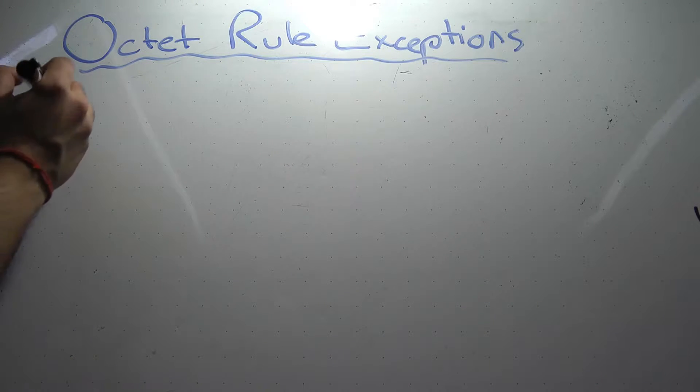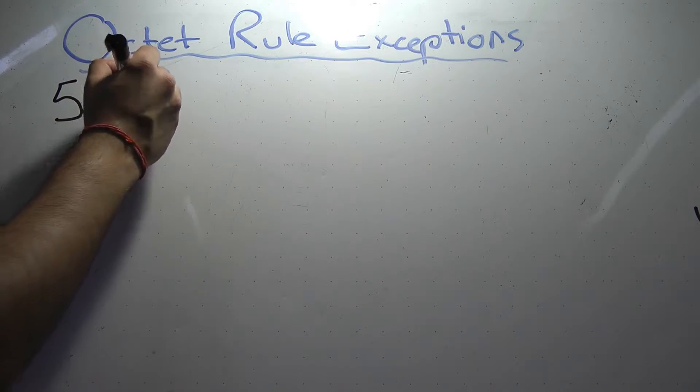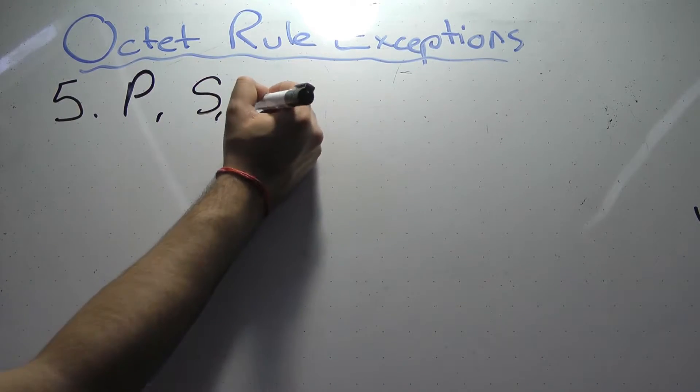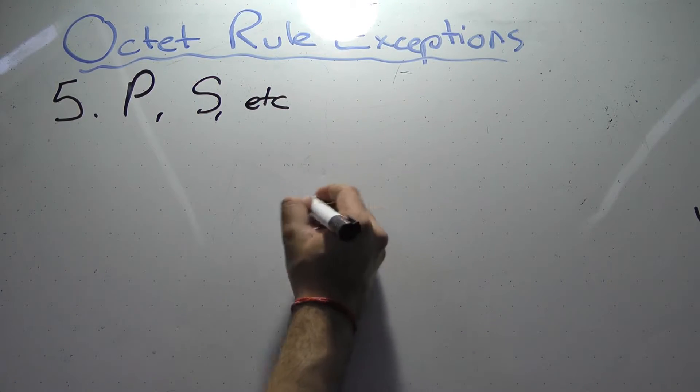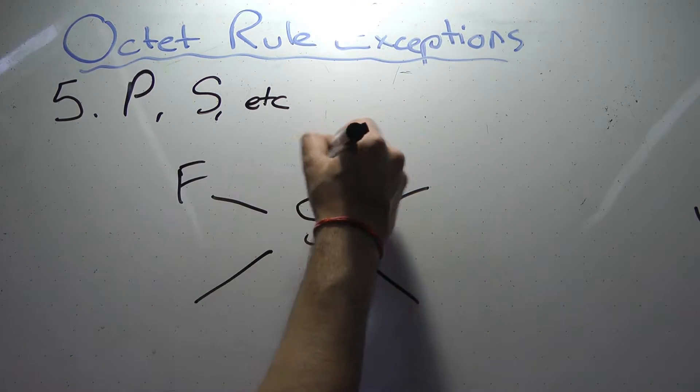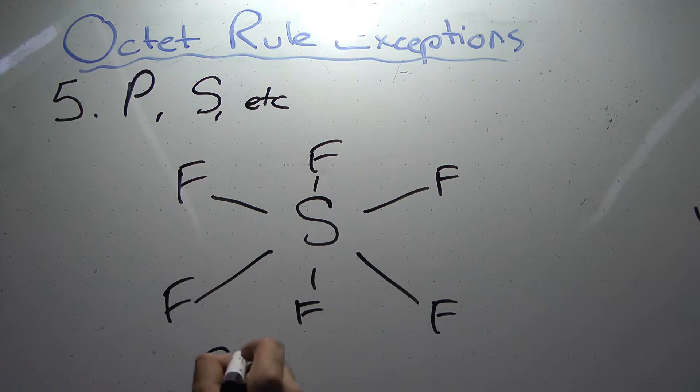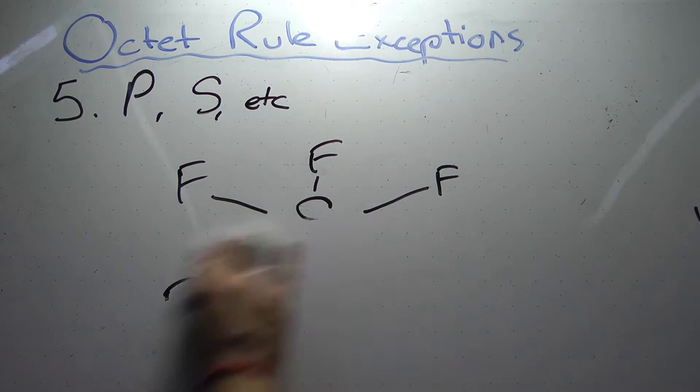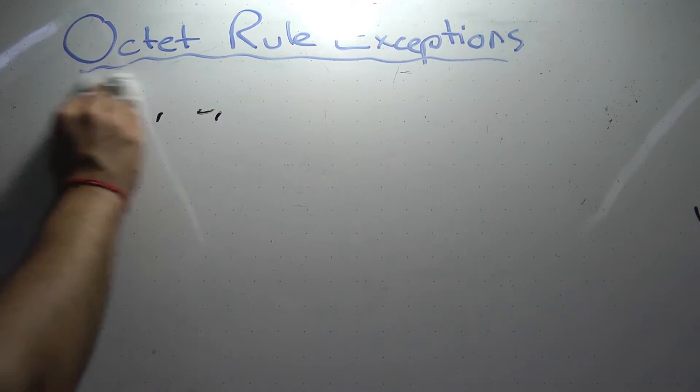The fifth rule is valence electrons of elements of the third and subsequent rows of the periodic table may absorb enough energy during bonding so that some or all are excited into their own unfilled d orbitals. This means that many more bonds than expected may form, such as phosphorus with up to 5 bonds and sulfur with up to 6 bonds. We can see this in sulfur hexafluoride.